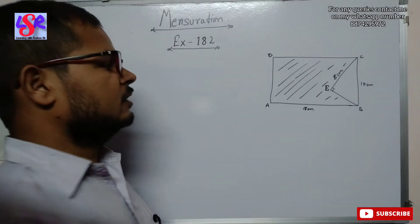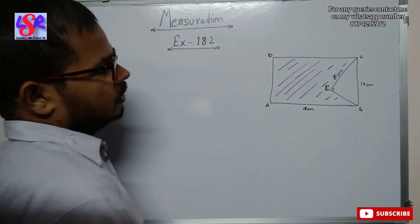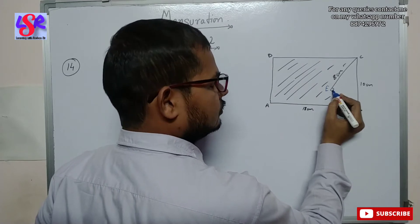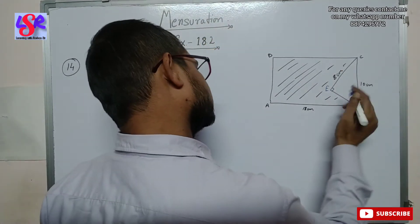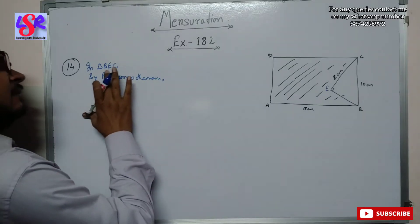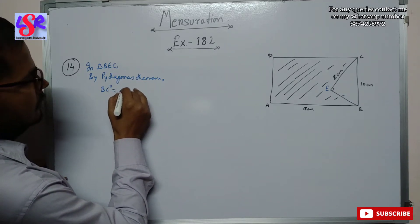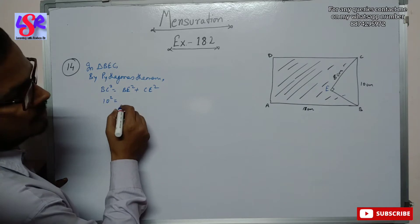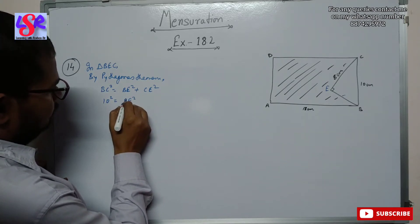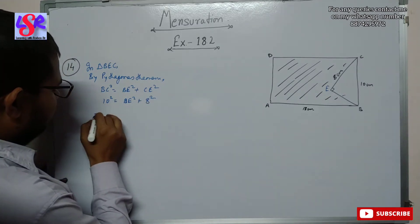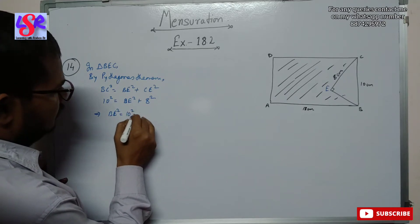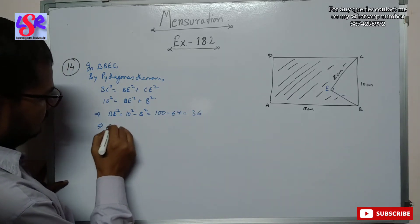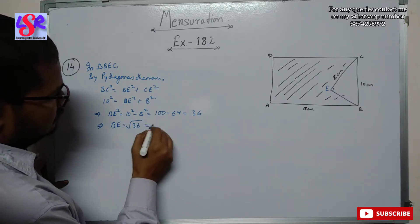In this question we have to find the area of the shaded region. First we use triangle ECD where we have a 90 degree angle, so it is a right angled triangle. Applying Pythagoras theorem in triangle BEC: BC² = BE² + CE², so 10² = BE² + 8², which gives BE² = 100 minus 64 = 36, therefore BE equals the square root of 36, which is 6 centimeters.